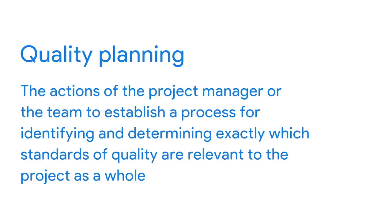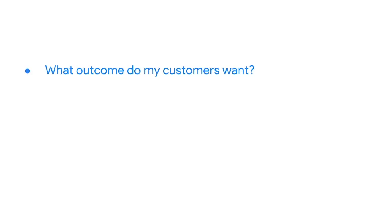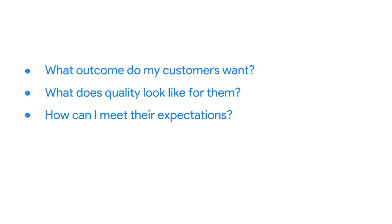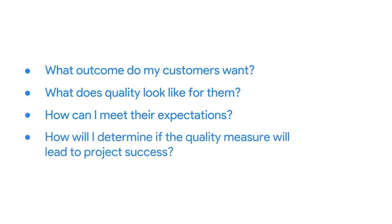Next up, quality planning. Quality planning refers specifically to the actions of a project manager or the team to establish and conduct a process for identifying and determining exactly which standards of quality are relevant to the project as a whole and how to satisfy them. To steer that discussion, you can ask yourself: what outcome do my customers want at the end of this project? What does quality look like for them? How can I meet their expectations? And how will I determine if the quality measures will lead to project success? This is where you'll plan the procedures to achieve the quality standards.